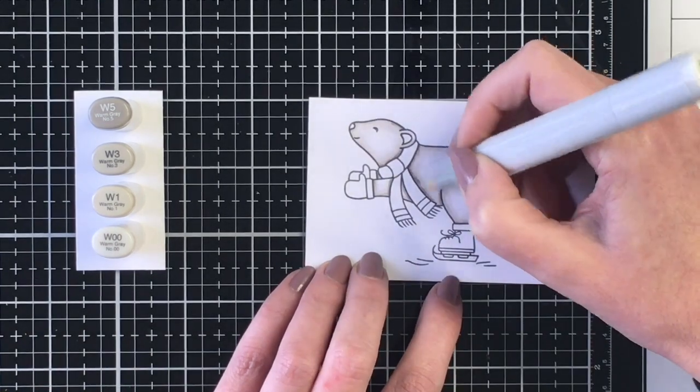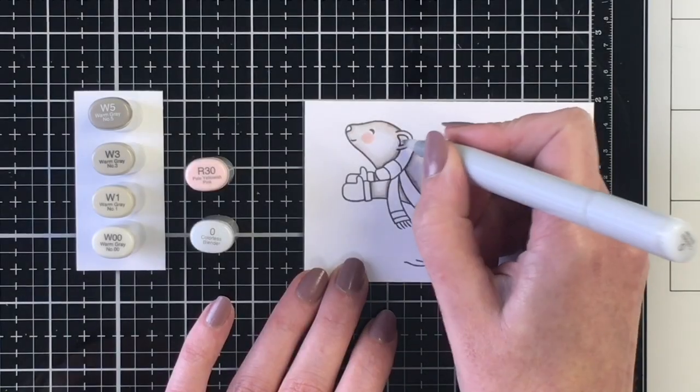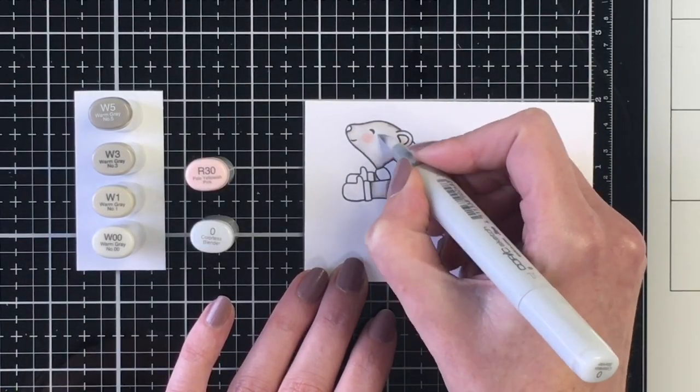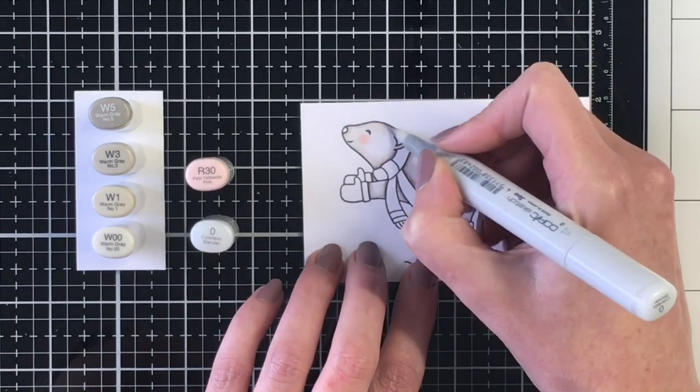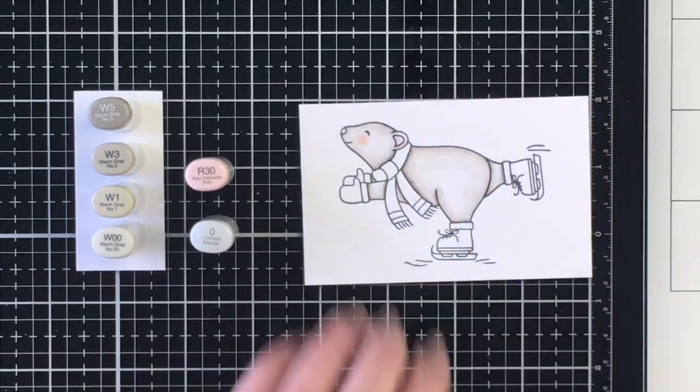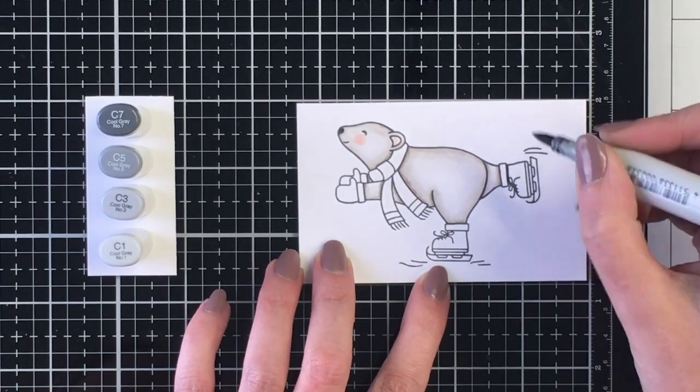And once these markers dry, the colors will come back and he will look a little bit whiter. I did use some R30 here for inside his ears and on his cheeks and then went ahead and used my blender marker to just pull back some of that color as well as on his body.